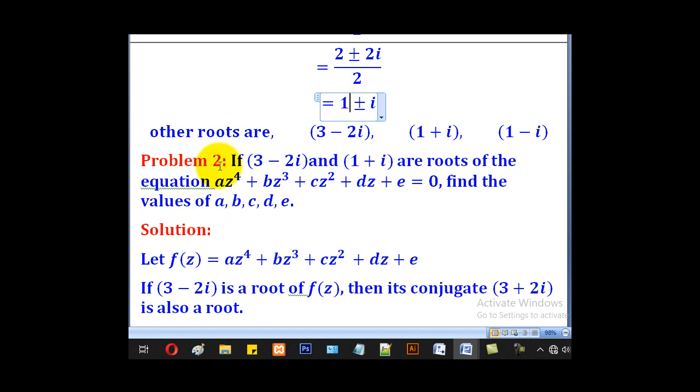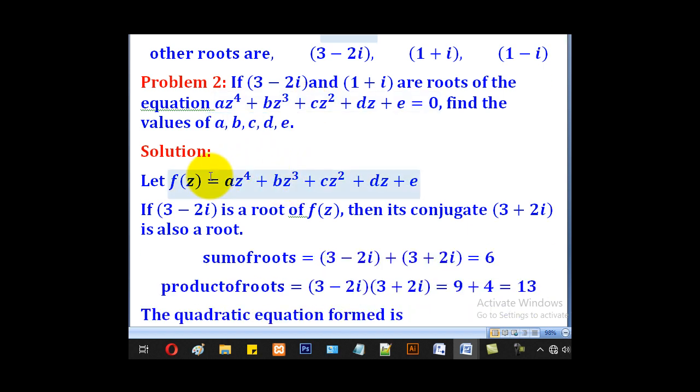Now we shall go to problem 2. If 3 - 2i and 1 + i are roots of the equation az⁴ + bz³ + cz² + dz + e = 0, find the values of a, b, c, d, and e. In that case, we shall let f(z) be equal to the given quartic equation.